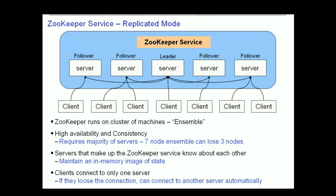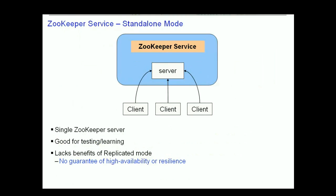A ZooKeeper client can perform a read operation from any server in the ensemble. However, a write operation must go through the ZooKeeper leader and requires a majority consensus to succeed. ZooKeeper may also be run in standalone mode, where only a single ZooKeeper server exists and all clients connect via this one server. Trading high availability and resilience for a simpler environment can be useful for testing and learning purposes.